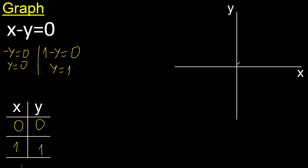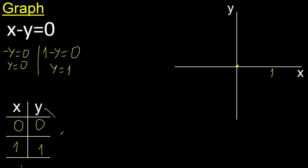0, 0 always here. x is 1: negative, positive, 1. y is 1: negative, positive. The point is here.